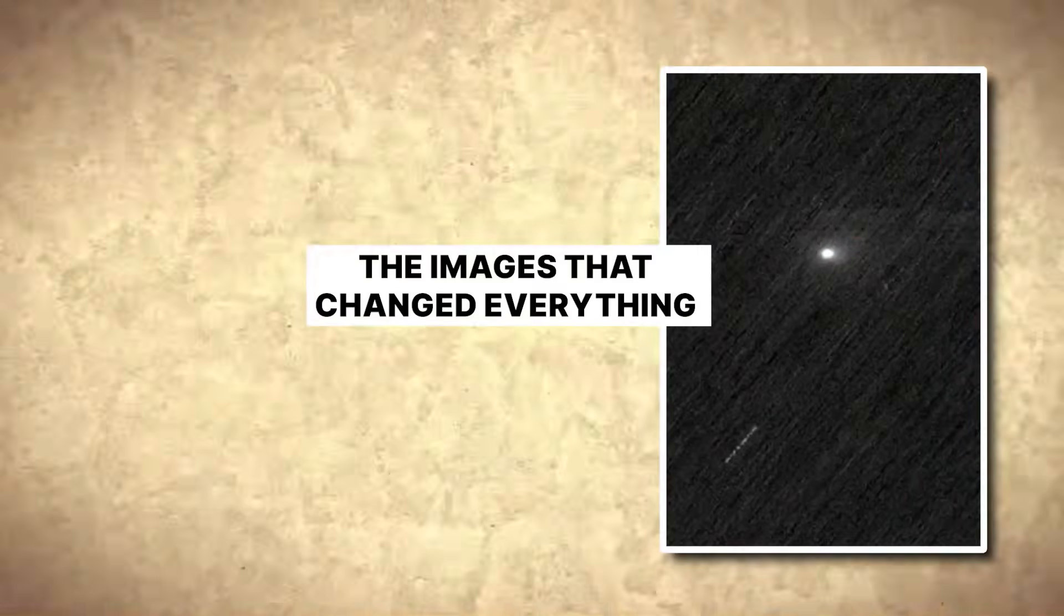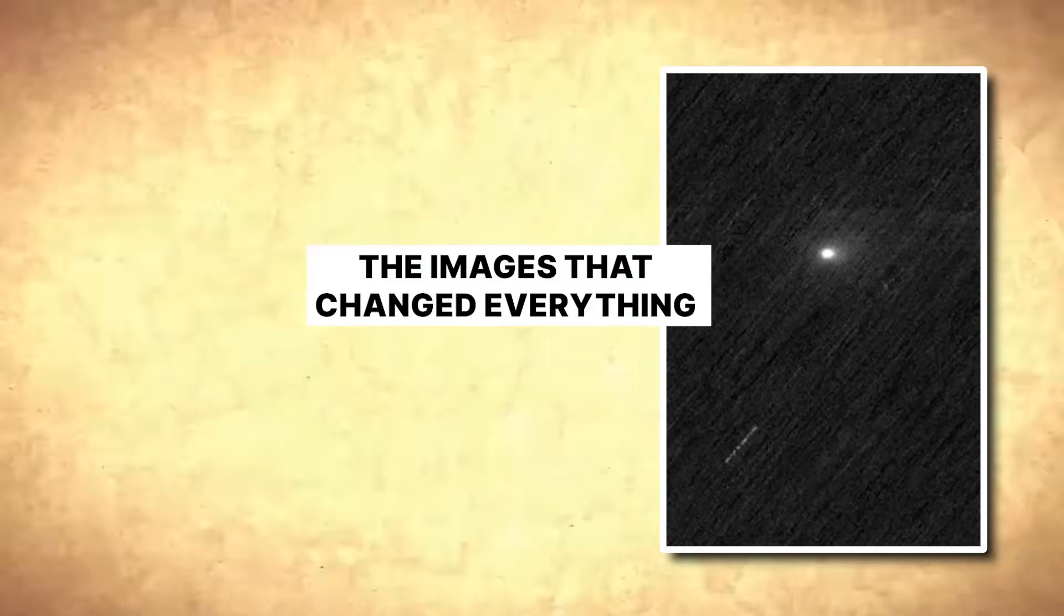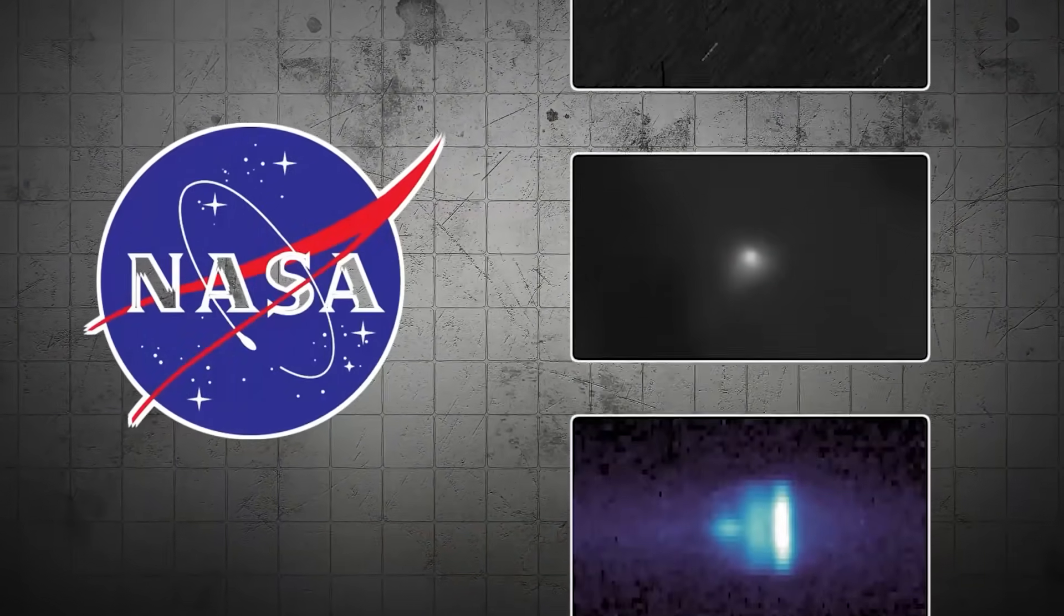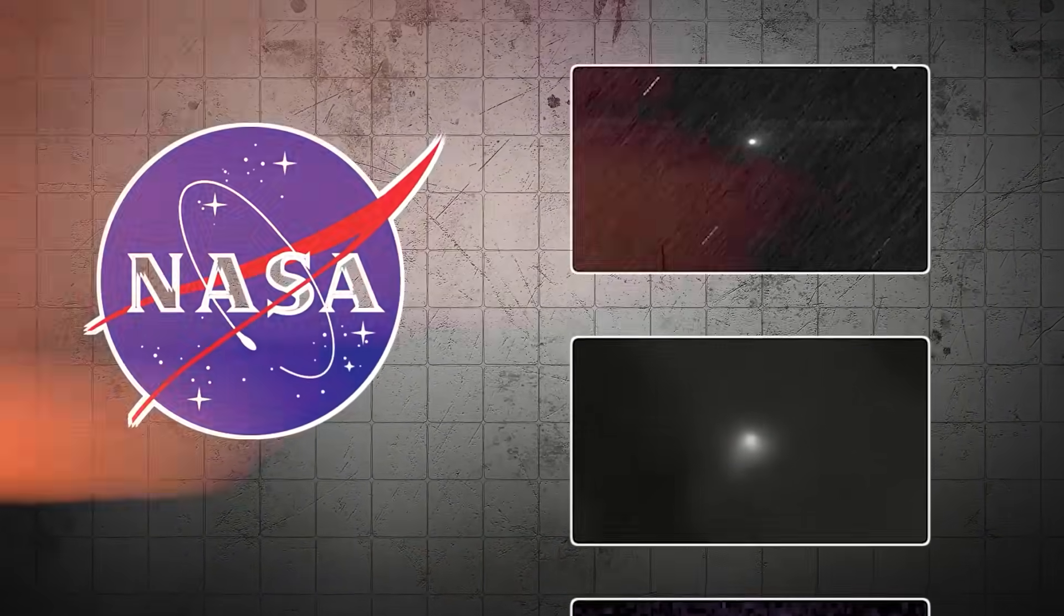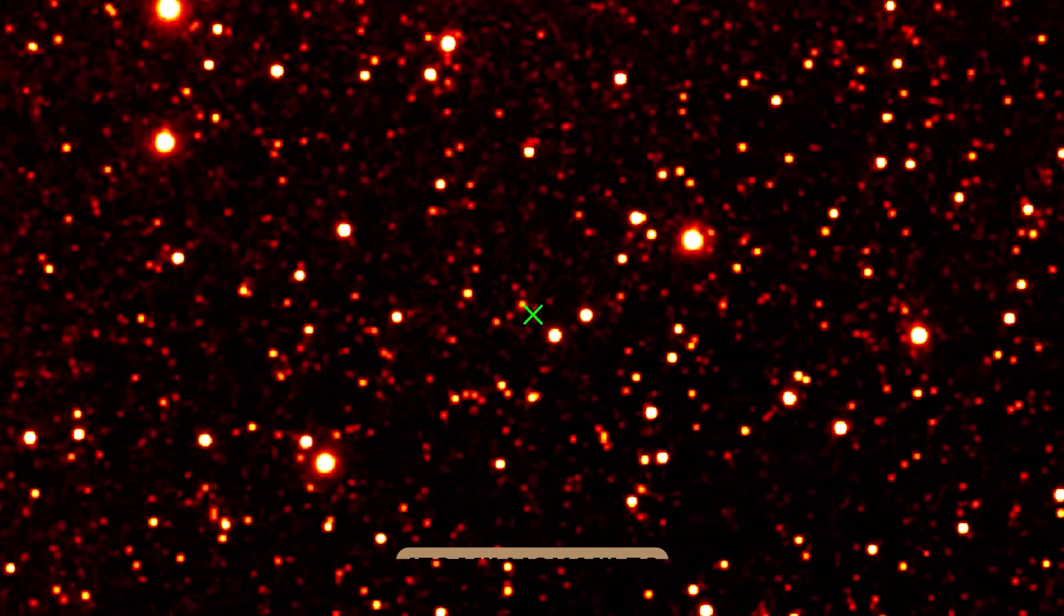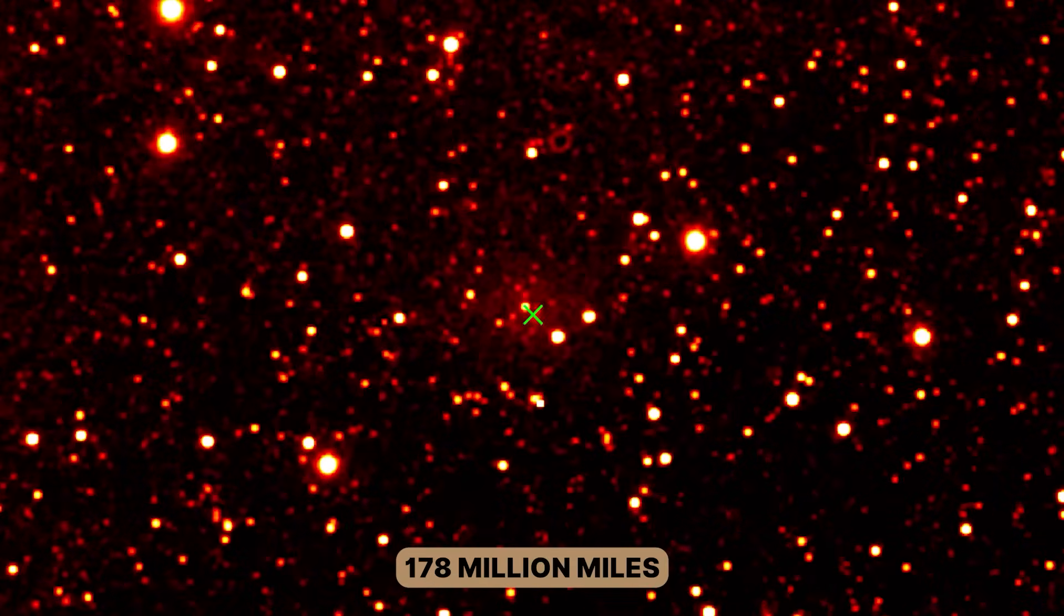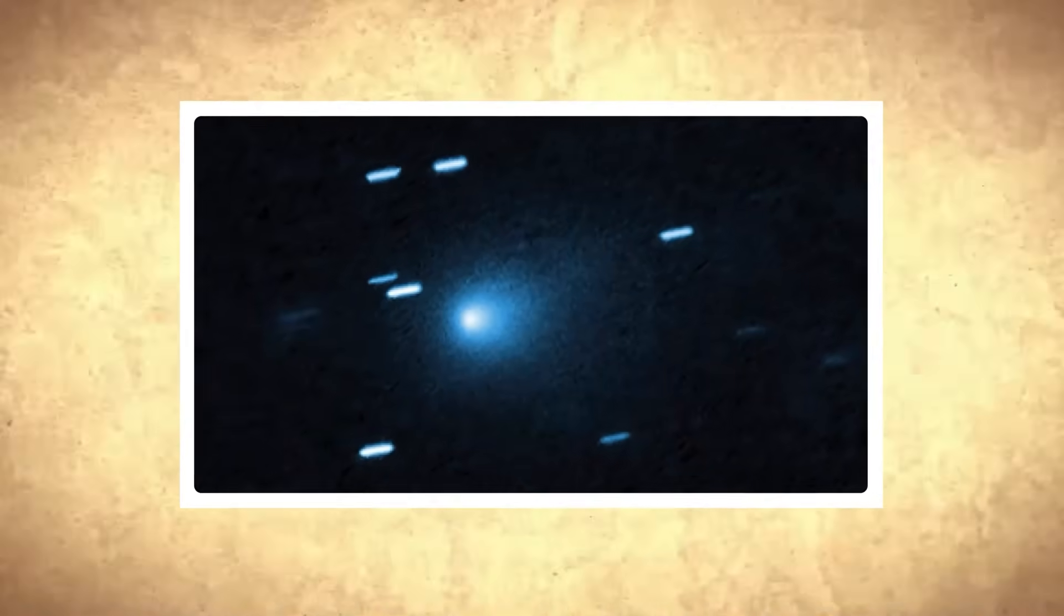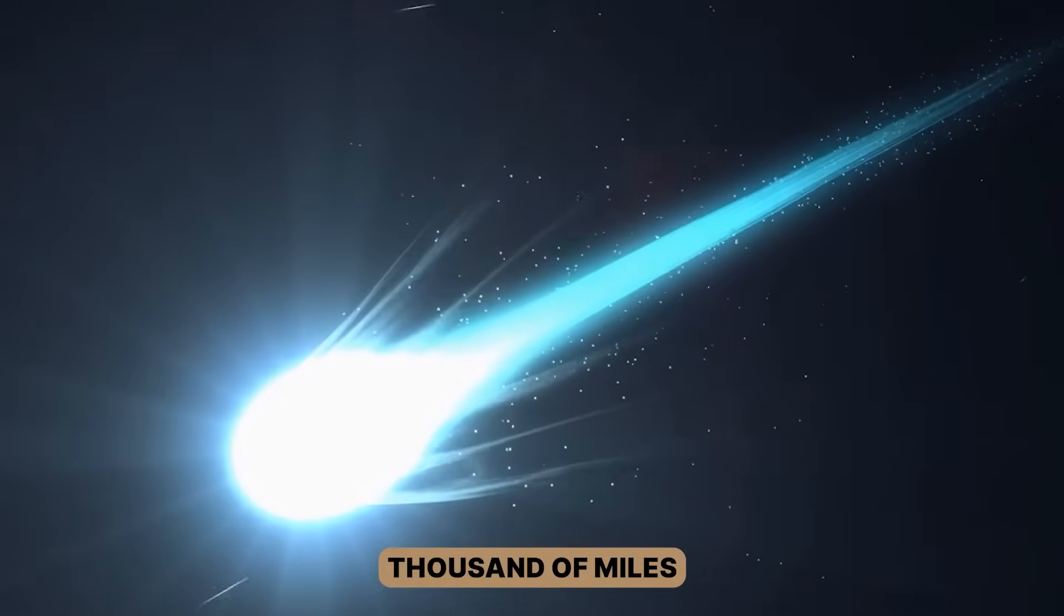The images that changed everything. On December 4th, NASA released fresh images that instantly reset the conversation around 3I Atlas. The Hubble Space Telescope captured the comet on November 30th, when it was 178 million miles from Earth, revealing something extraordinary. The images show a bright glowing blue cocoon of gas and dust wrapped around the comet's core, stretching thousands of miles into space.